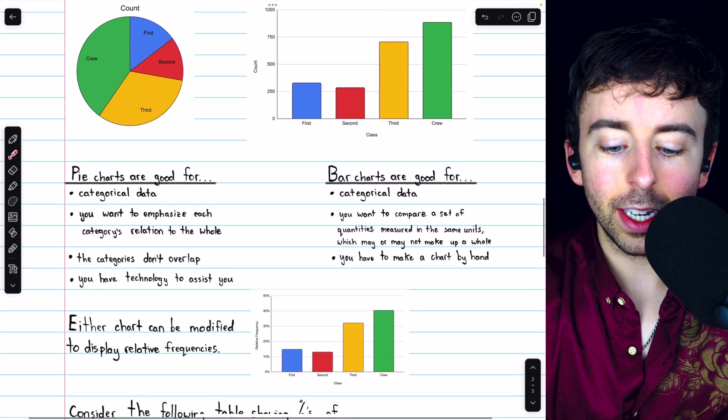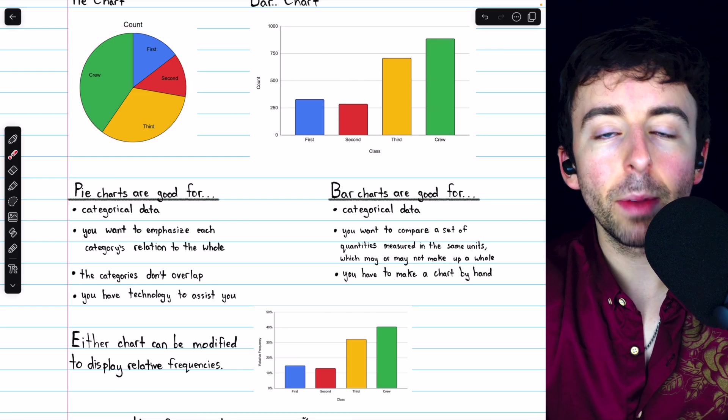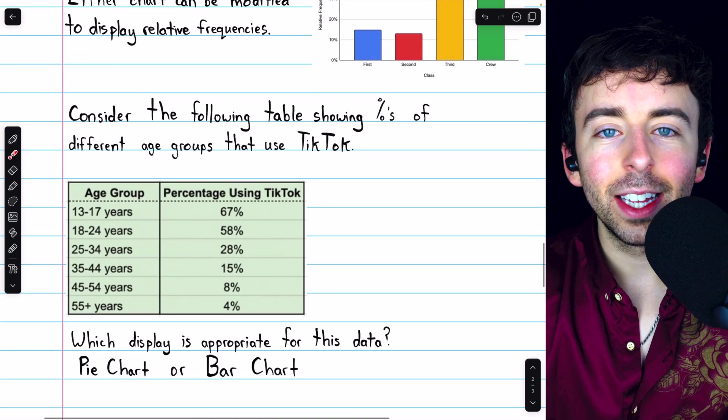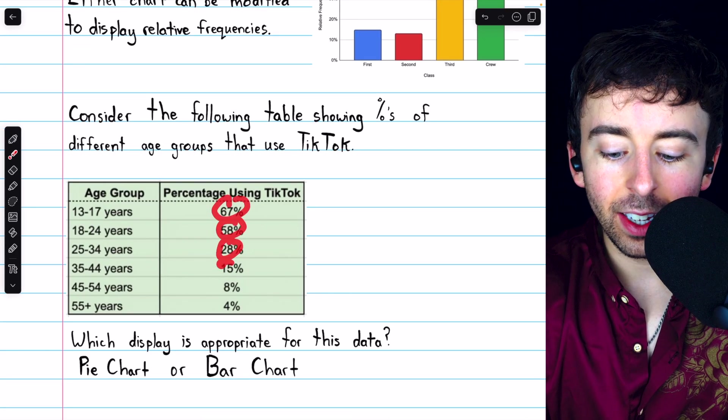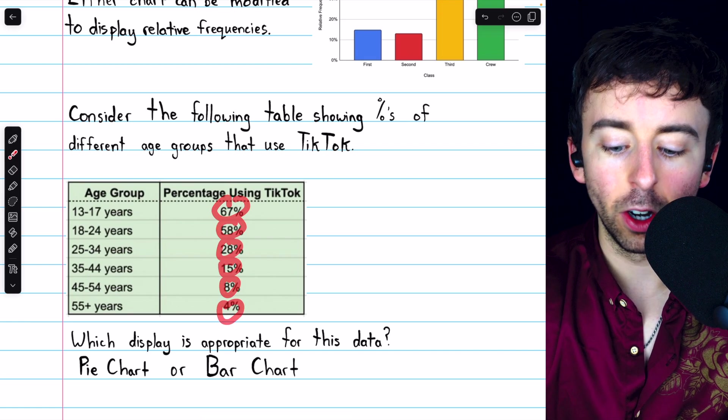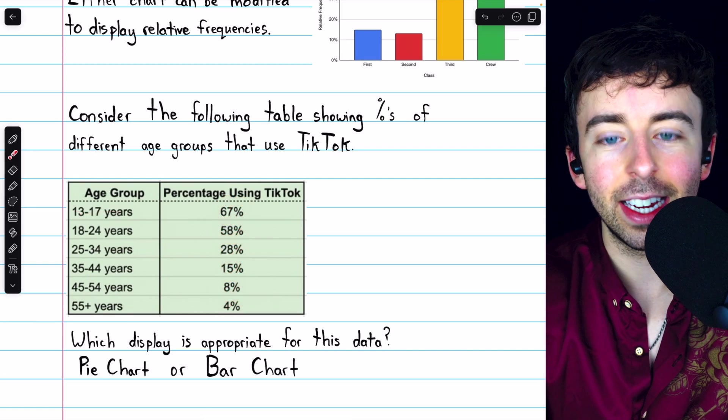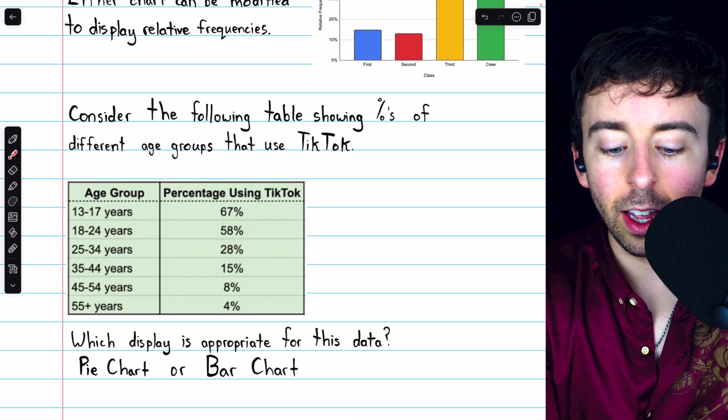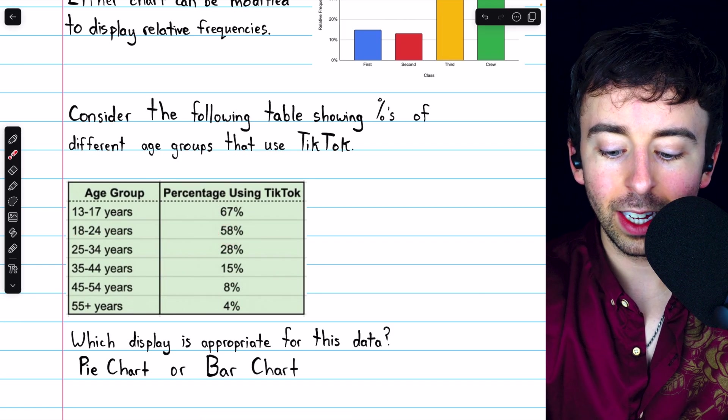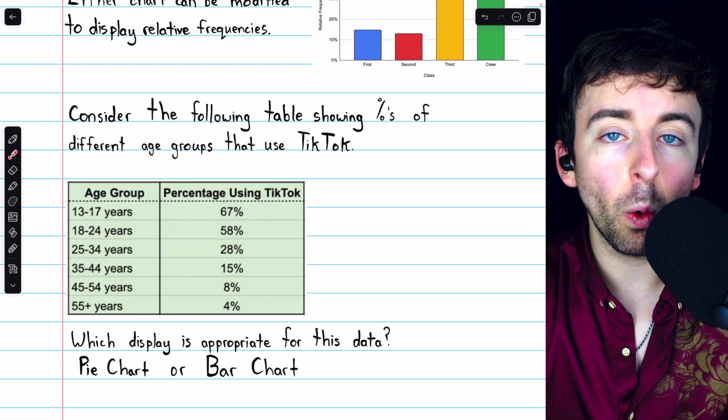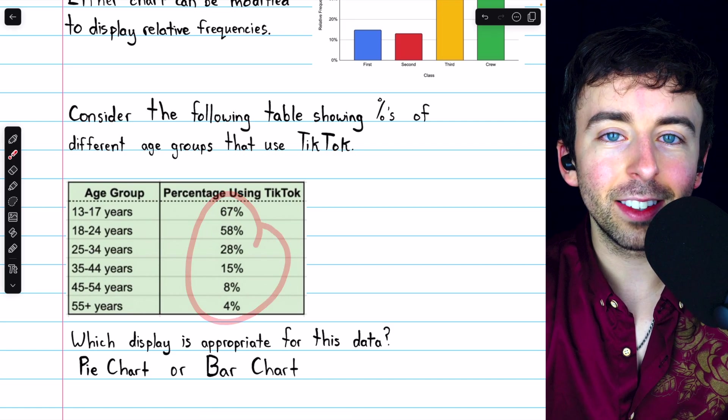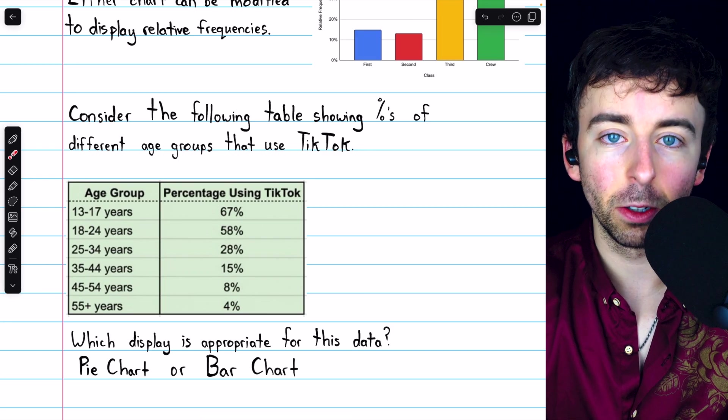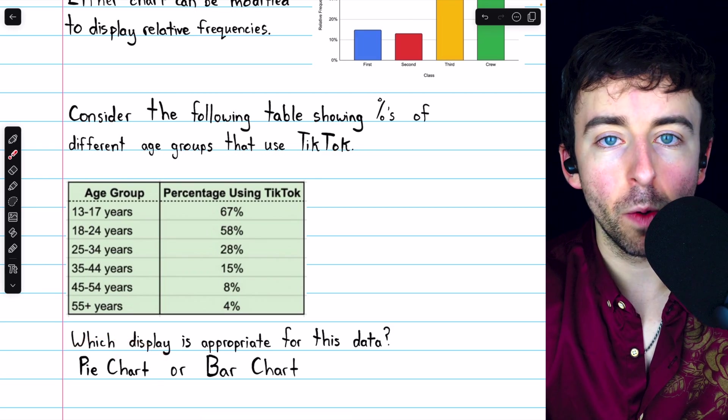Remember what we said. Visually, a pie chart suggests the slices make up a whole. However, in this case, that's not what we're going to have. The data is a bunch of percentages. Each percent is of a certain whole: 67% of all 13 to 17 year olds. But the percents are of different wholes. This is 58% of 18 to 24 year olds. This is 8% of 45 to 54 year olds. If we try to display all these percents, they're certainly not going to add to 100. They're certainly not going to make up a single whole.